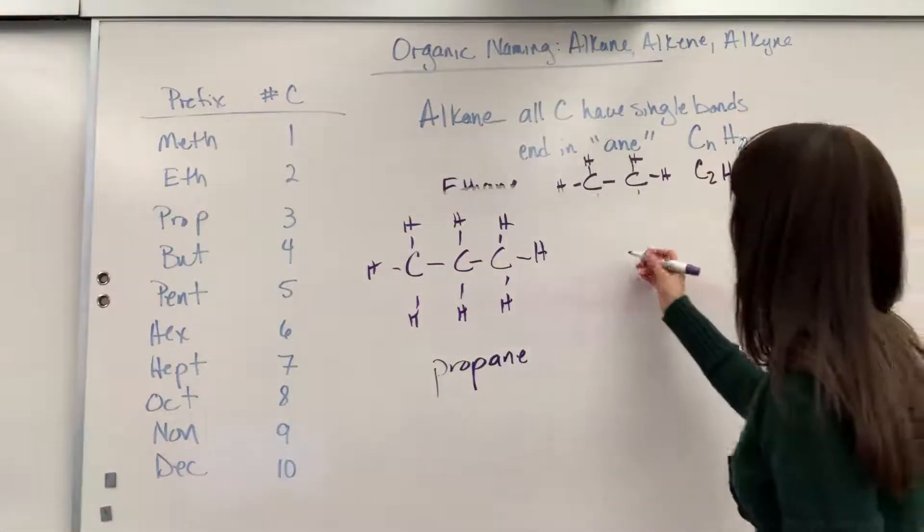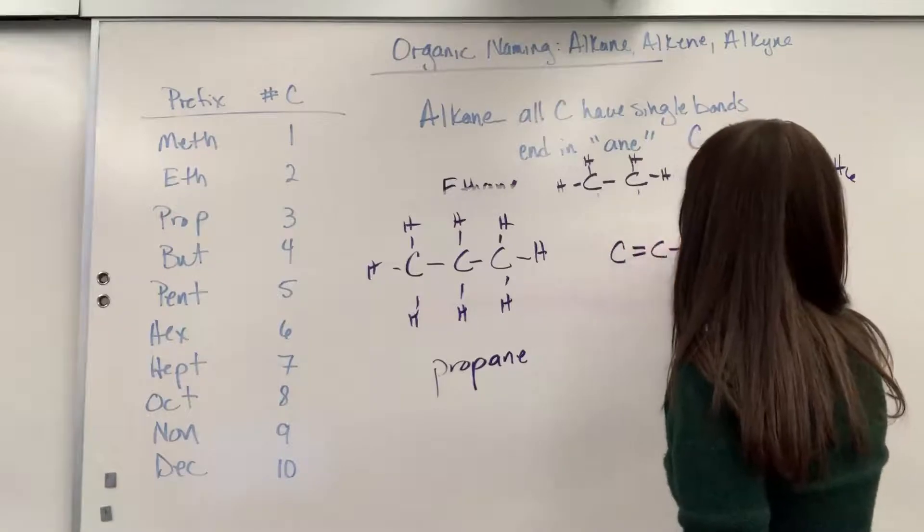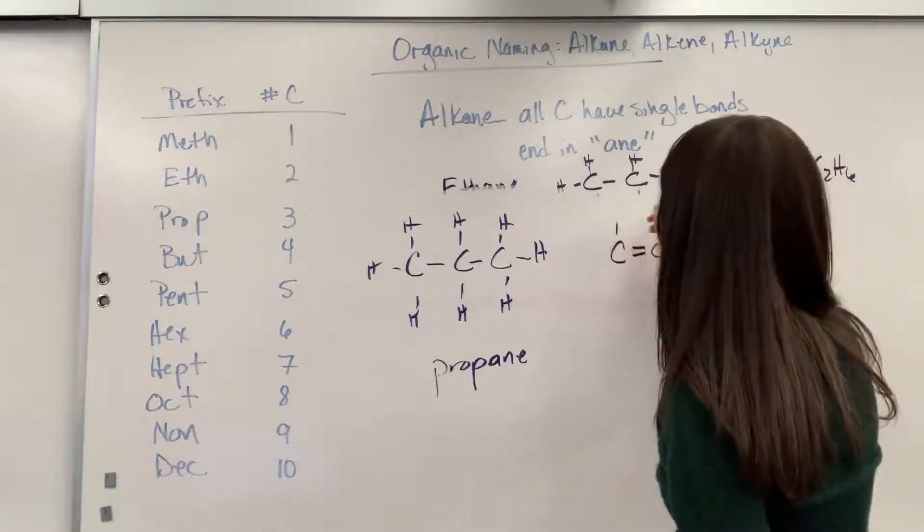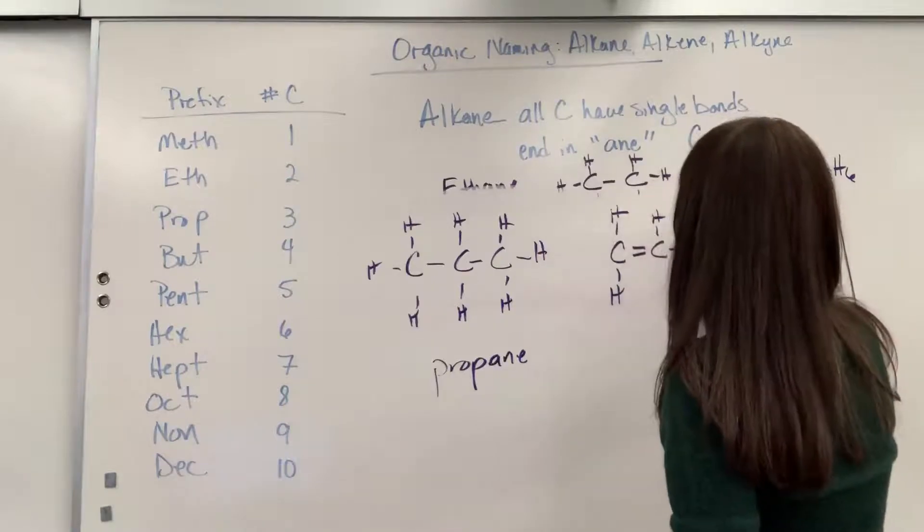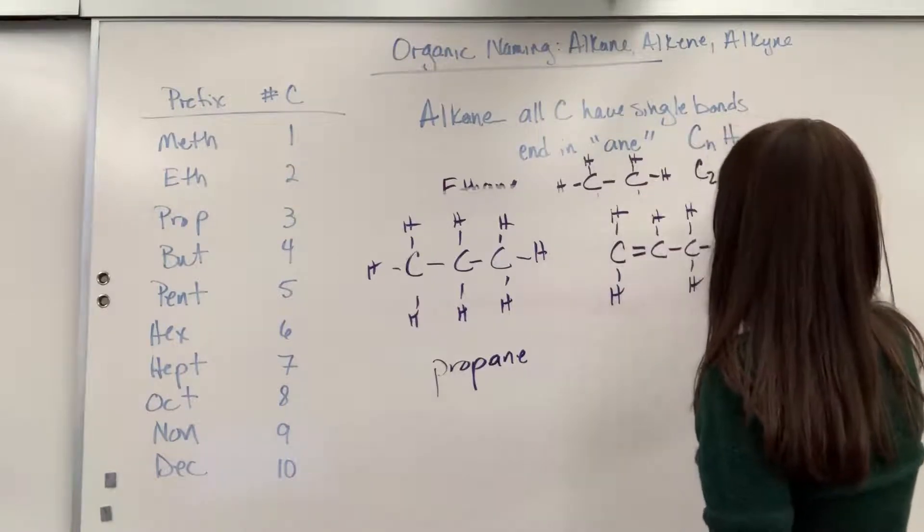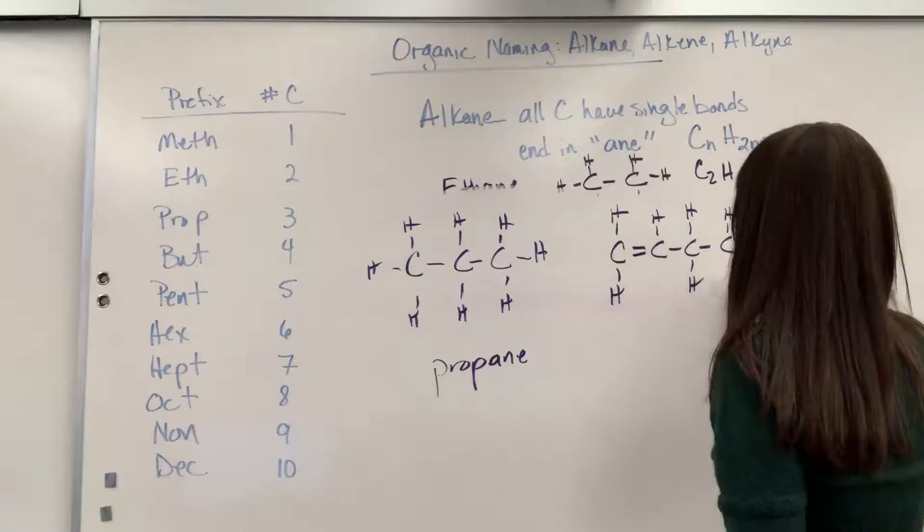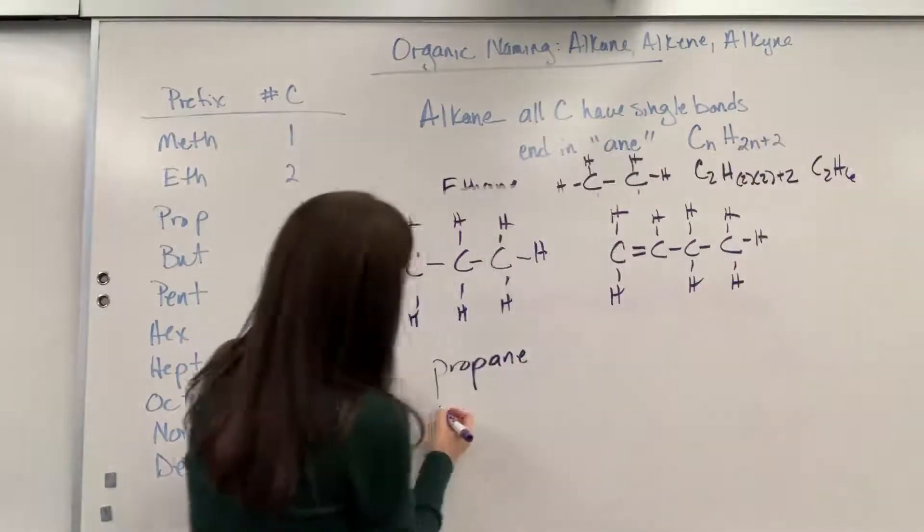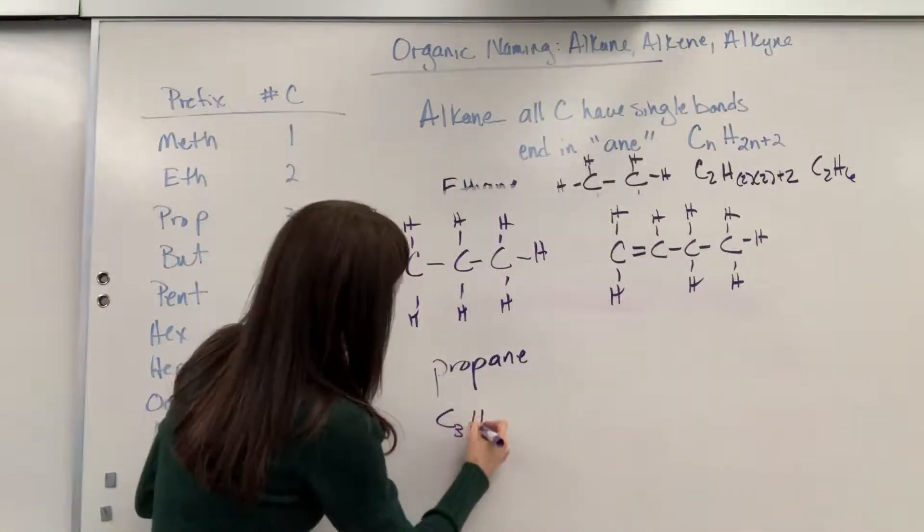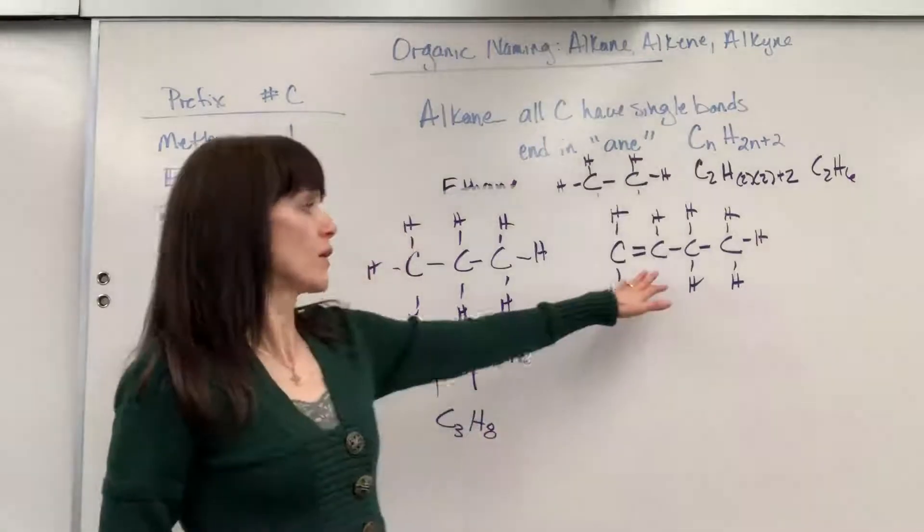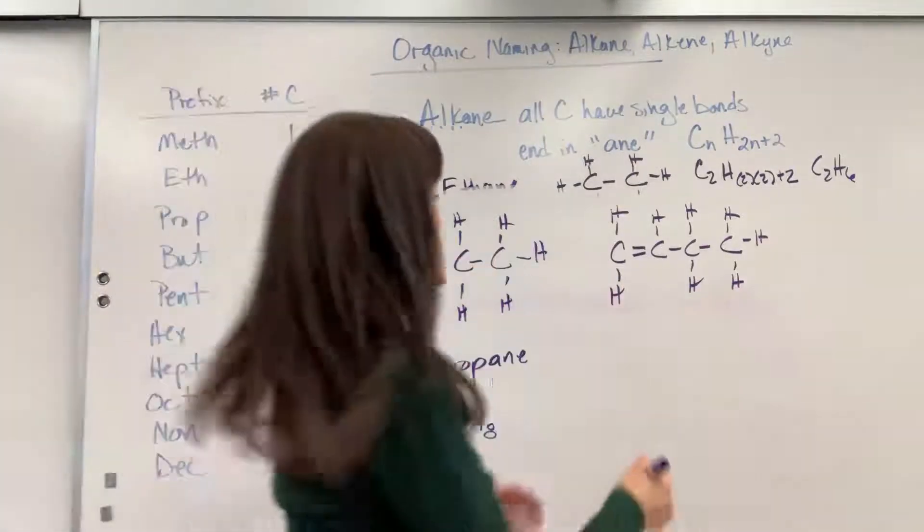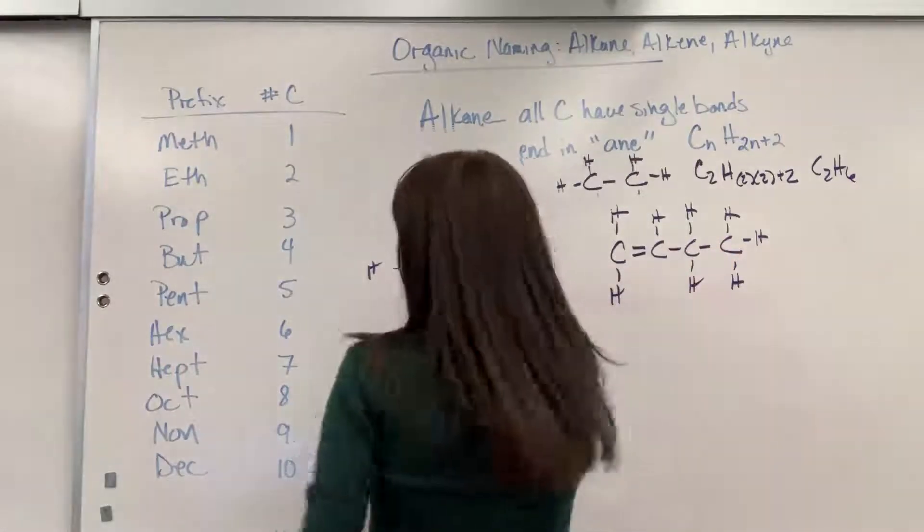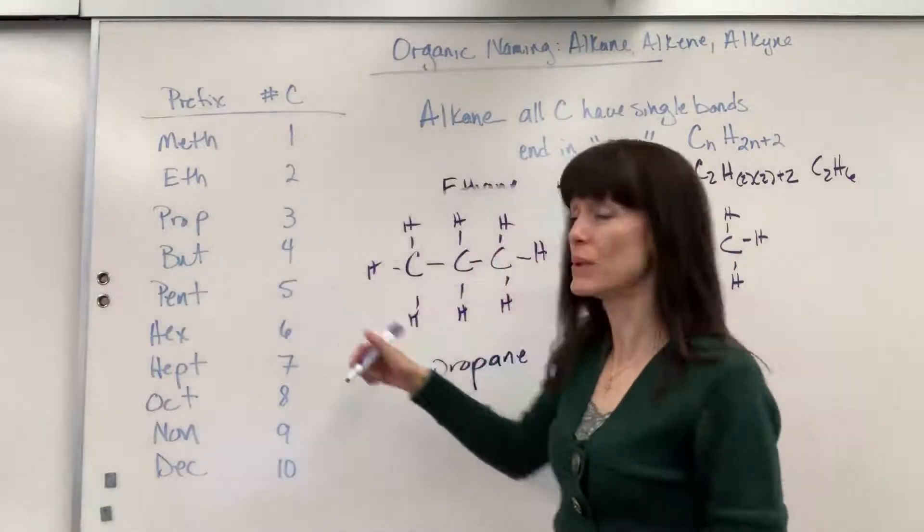Let's do another one. And on this, we're going to have a C3H8. So I want to name this. First thing I do, count the carbons. We've got one, two, three, four. My prefix for four is bute.